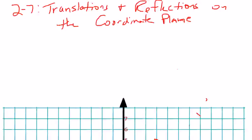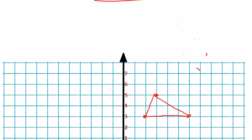Lesson 2-7, Translations and Reflections on the Coordinate Plane. In this lesson, we will be discussing two specific types of transformations.